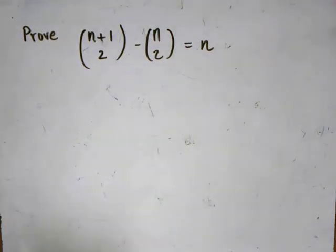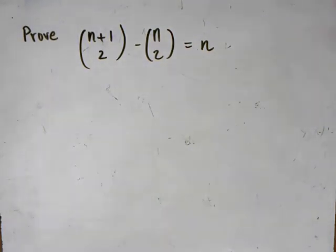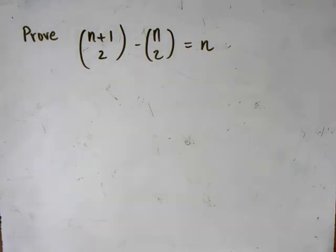In the last video we talked about factorial identities, and in this one we're going to apply them to do a proof with combinations.